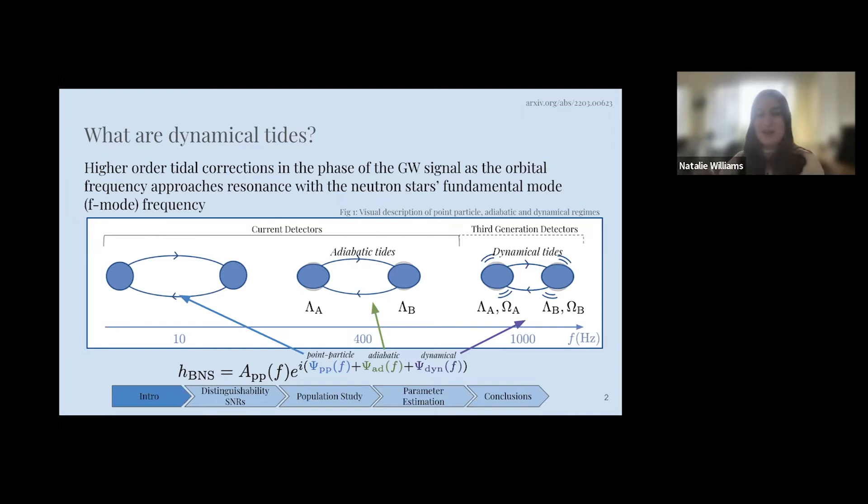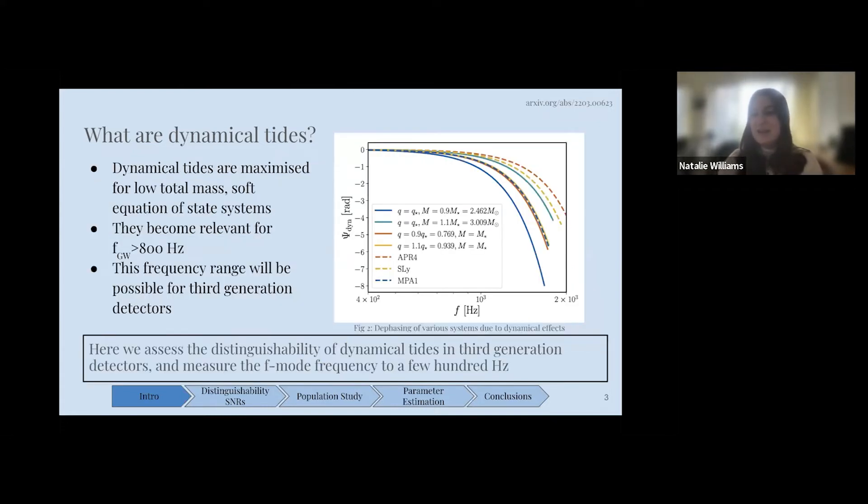In our waveform model, we capture tidal information within the phase by splitting it up into a point particle phase, essentially a binary black hole phase, into an adiabatic phase, and into a dynamical phase. The dynamical tides are maximized by small total mass and also by stiffer equations of state, and they become relevant at about over 800 hertz.